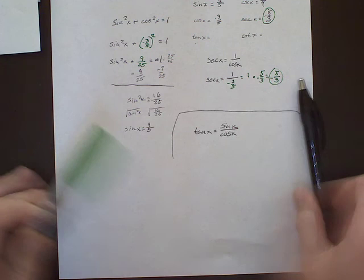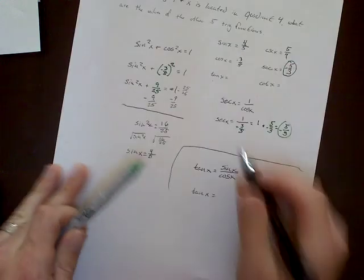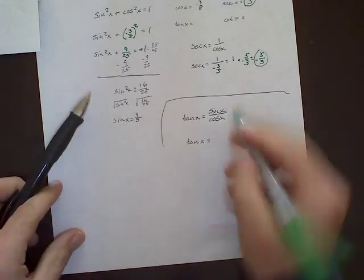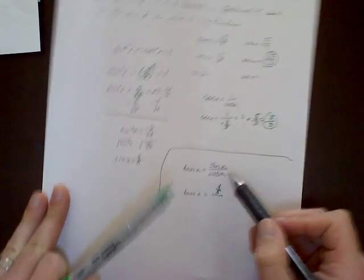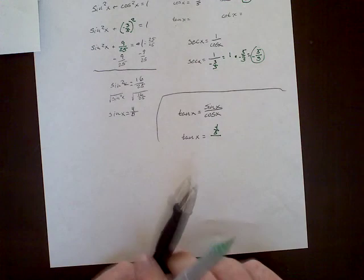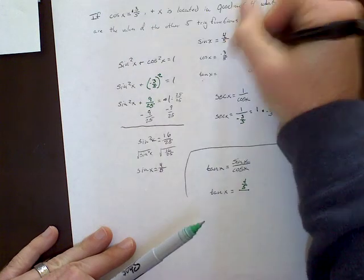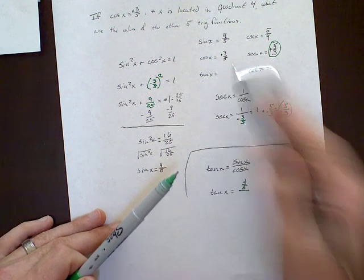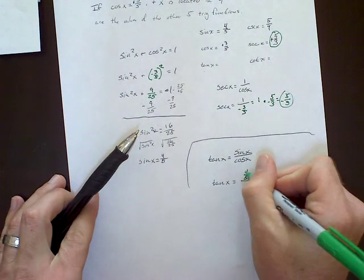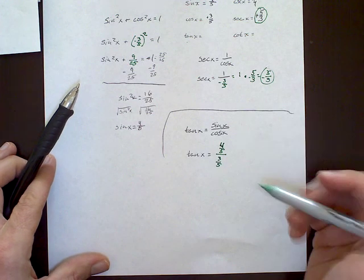So now that we're using this one, all we want to do is plug in, again, what we know. So we don't know anything about tangent, but we do know, in looking above here, that sine is equal to 4 over 5. So instead of sine, I'm going to put 4 over 5. Then the other thing we need is cosine, which in the beginning we're given negative 3 over 5. So now we have, actually, looking at this, this should be a positive, sorry, go back and fix that. It should be a positive. And I'll explain why in a minute. So cotangent's positive 3 over 5.